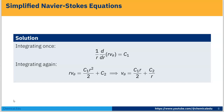Integrating once: (1/r) · ∂/∂r(r·v_θ) = C₁. Integrating again: r·v_θ = C₁·r²/2 + C₂. Therefore the velocity profile is: v_θ = C₁·r/2 + C₂/r. We now need to determine the constants C₁ and C₂ using boundary conditions.